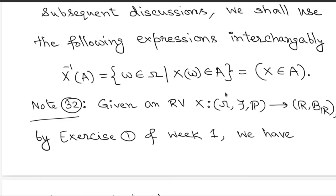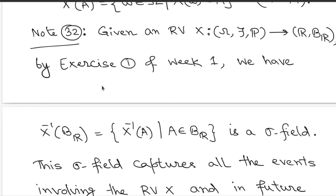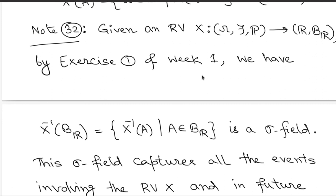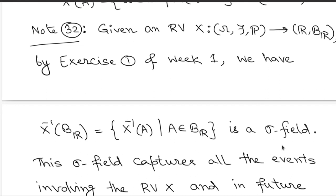There is an interesting structure for these pre-images. Starting with a random variable X on (Ω, F, P), by Exercise 1 of Week 1, if you collect all possible pre-images of Borel sets under X, you obtain a sigma field on the domain side. This sigma field captures all events involving the random variable X, and we call it σ(X) — the sigma field generated by X. Since X⁻¹(A) belongs to the original sigma field F for all Borel sets A, this collection σ(X) is a sub-sigma field of F.